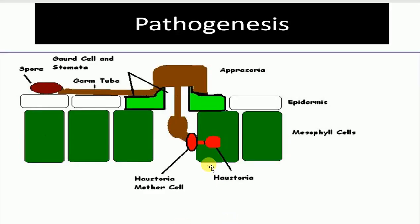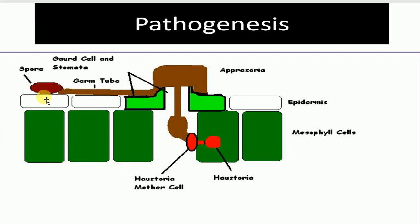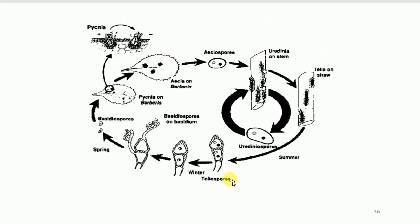Now let's look at the pathogenesis — how this pathogen enters the host. The spore lands on the leaf, and through the guard cell of the stomata, the germ tube develops and enters inside the stomata. Then an appressorium develops, followed by infection structures in the mesophyll cells of the leaf below the epidermis layer. This is how the pathogen infects the plant.